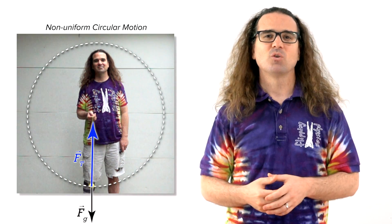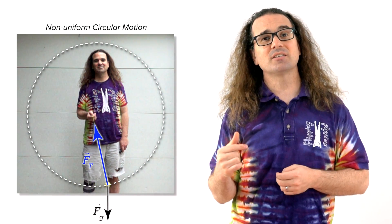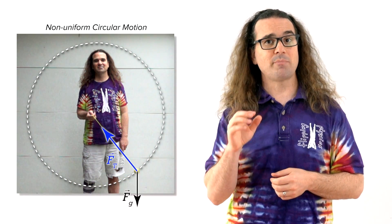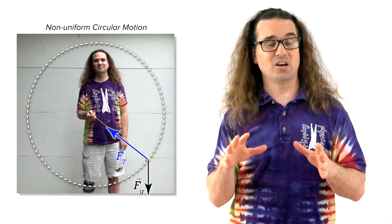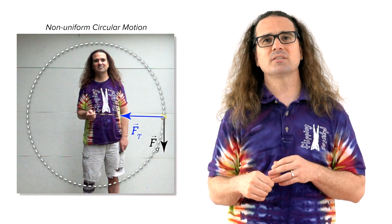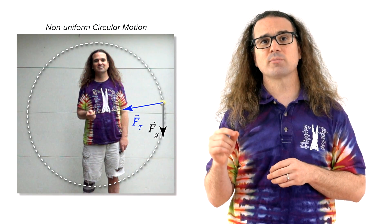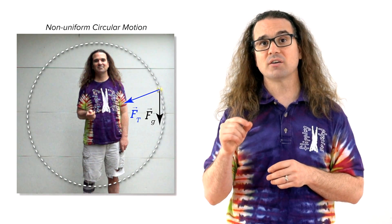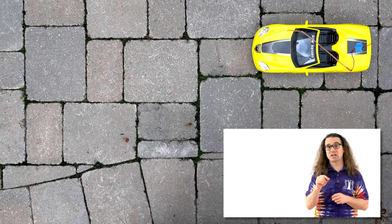Good morning. We already discussed the non-uniform circular motion of a ball on the end of a string. Today, we are going to discuss the non-uniform circular motion of this accelerating toy car.